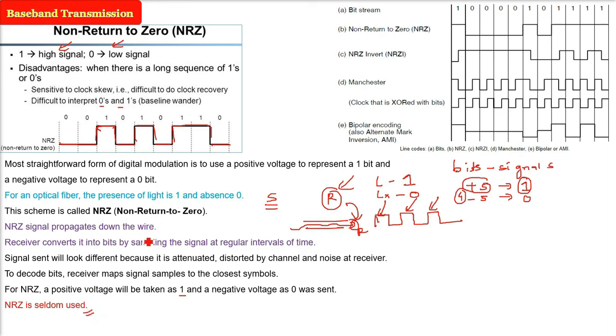But this NRZ is seldom used, is not much used. Therefore, considering the different engineering considerations, wire, technologies, all these signs, line codes are there. These are different line codes that better meet these engineering considerations.